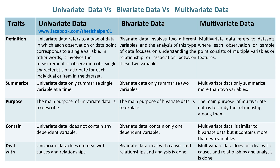The main purpose of univariate data is to describe. Whereas the main purpose of bivariate data is to explain. Whereas the main purpose of multivariate data is to study the relationship among them.